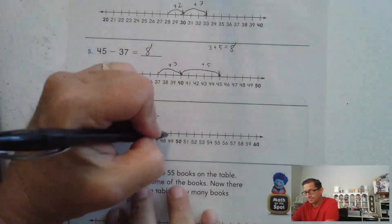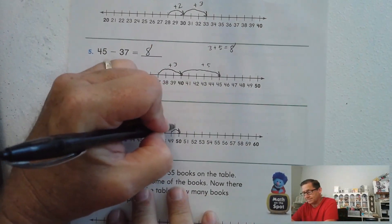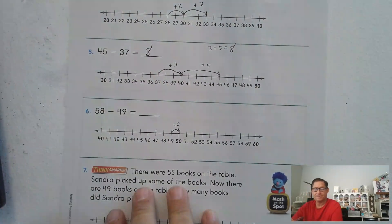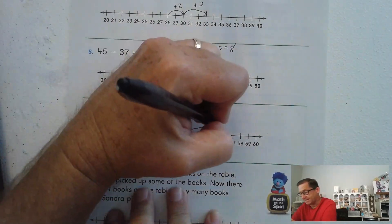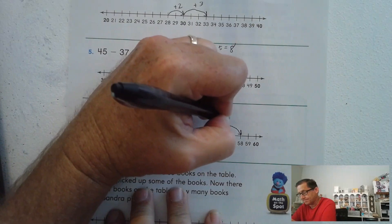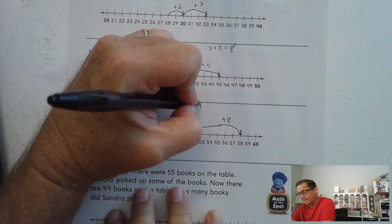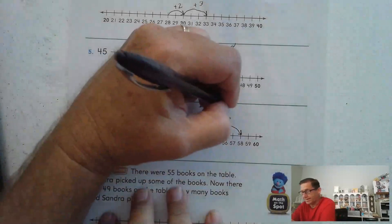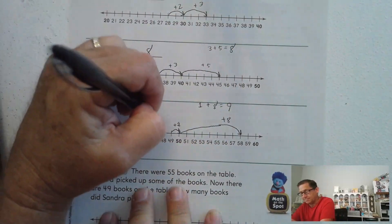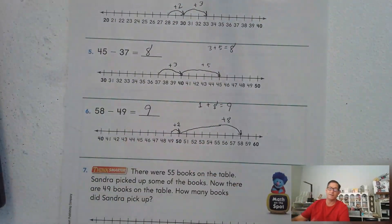58 minus 49. So we're going to jump 1 to get to 50, and then jump 8 to get to 58. So we have 1 plus 8. Well, 1 more than 8 is just 9, right? That's because it's the next number. So 58 minus 49 is 9.